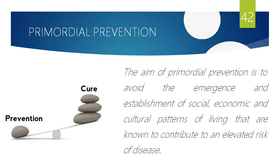Primary prevention is different. In primary prevention, a particular individual or group already has the habit, but we are modifying the risk factor so that they won't get lung cancer or the disease. Primordial prevention is preventing the occurrence of a risk factor by establishing social, economic, and cultural patterns so that people won't acquire the habit or risk factor at all.